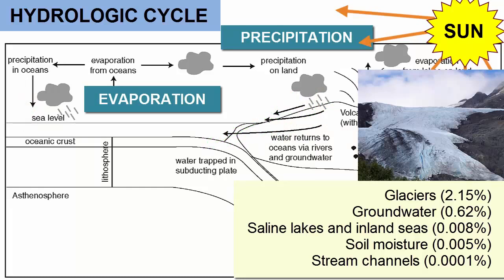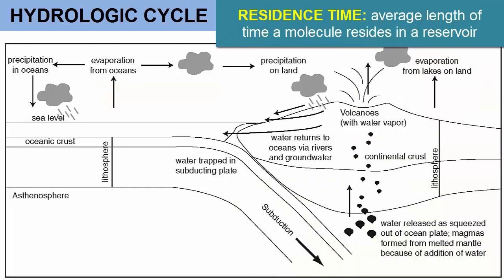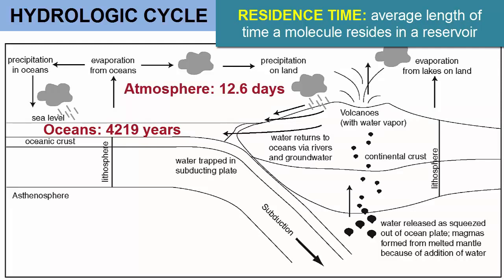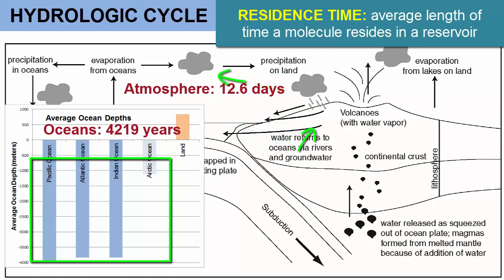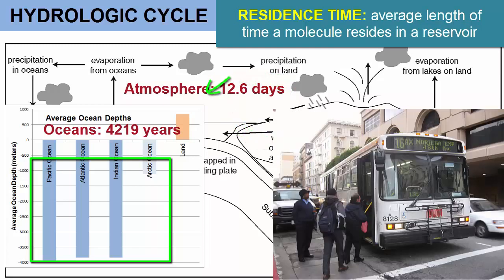Through continued evaporation and precipitation, water moves in and out of various reservoirs, residing in each for a limited time. The residence time, or average length of time a water molecule resides in the oceans, is 4,219 years. In comparison, the residence time of water in the atmosphere is 12.6 days. Why the difference? There is so much deep water in the oceans that isn't in contact with the atmosphere — that makes the oceans a large, stable storage reservoir. The atmosphere, on the other hand, is short-term storage, where water resides on average a little less than two weeks. Water enters and leaves easily and quickly through evaporation and precipitation, like a city bus with passengers getting on and off at stops along the way.